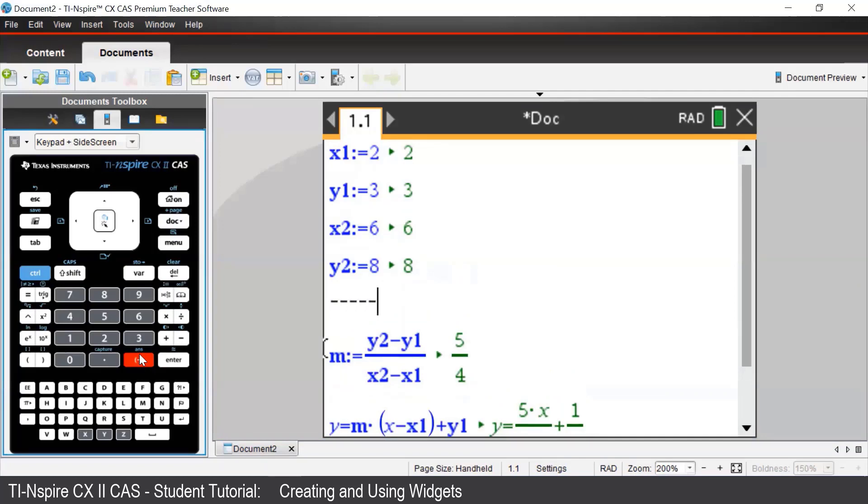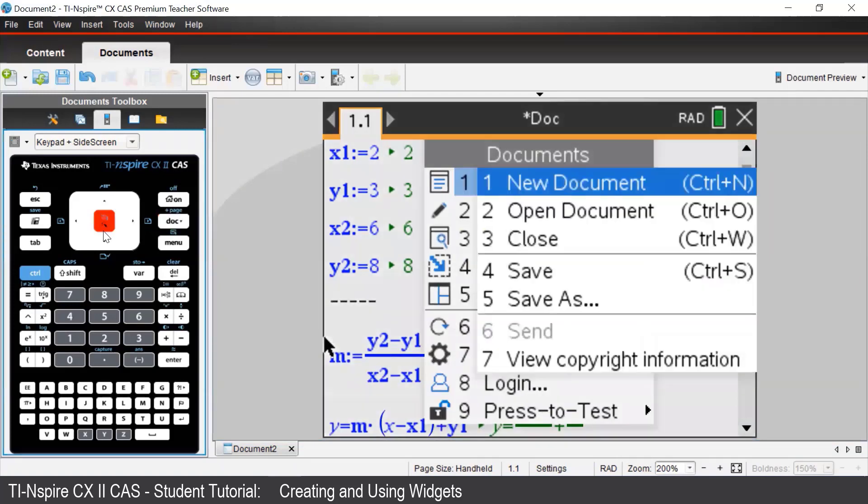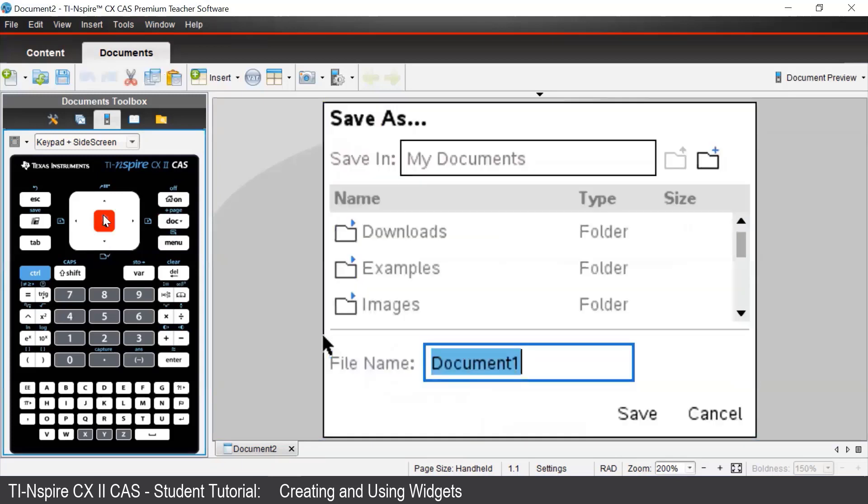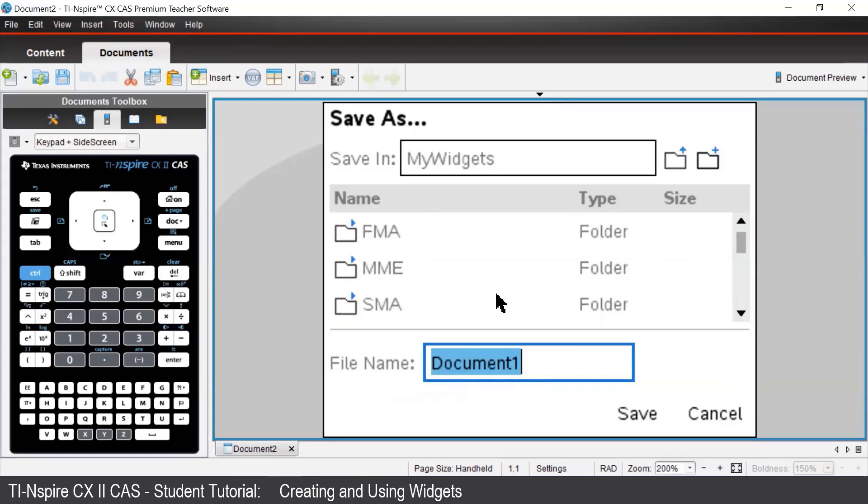To make this file as a widget, we need to save it as a widget. To save the document, we can press the dot button on the keypad, then select file and select save as. The key step here is that we must save the file in the MyWidgets folder.